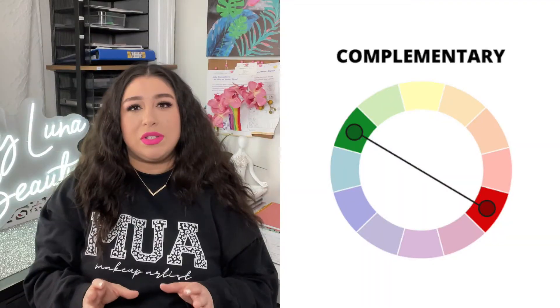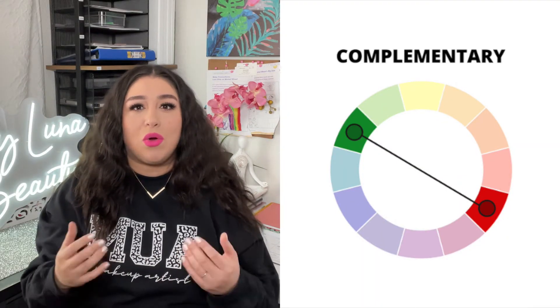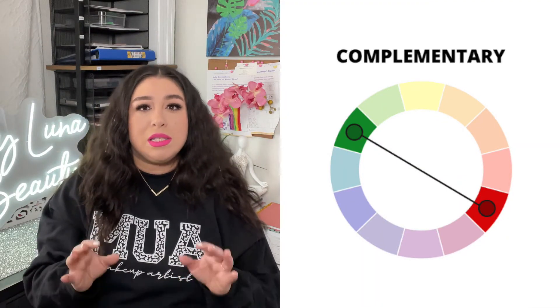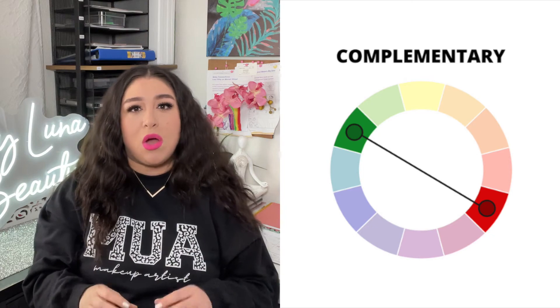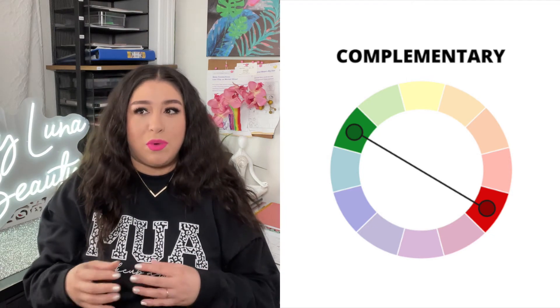Complementary colors are used in makeup to either create contrast or neutralize the skin tone. Some common examples are green, which is used to neutralize redness, while orange is used to neutralize dark spots and under-eye circles. Complementary colors can also be used to create bold and dramatic makeup looks.